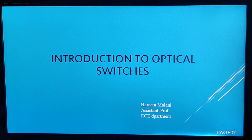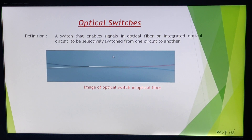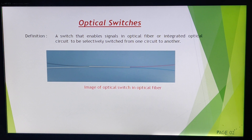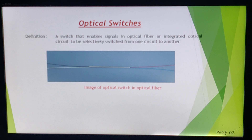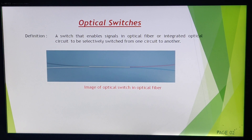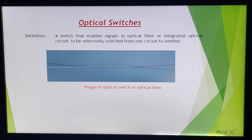This topic is very easy to understand and very important for optical fiber communication. So we will start with Introduction to Optical Switches. What is an optical switch? A switch is a device which can switch the signal from one end to another — we can turn on or off the signal passing through that device. Definition: a switch that enables signals in optical fiber or integrated optical circuit to be selectively switched from one circuit to another. Selectively switched means it depends on us which signal should be transmitted or not.